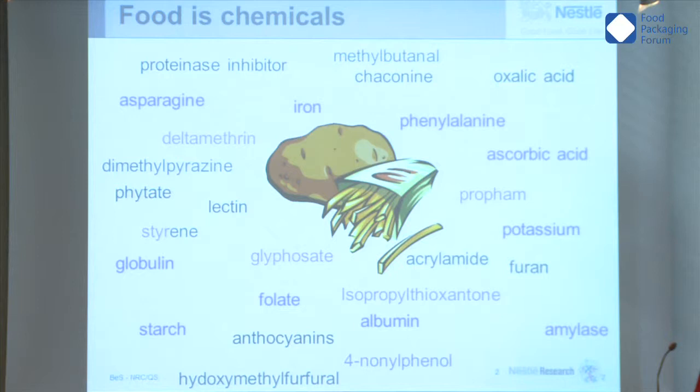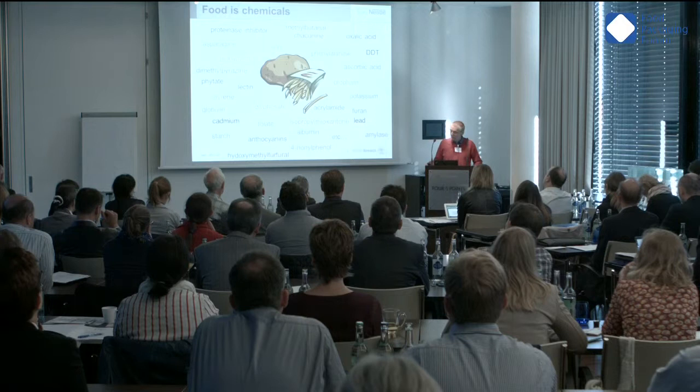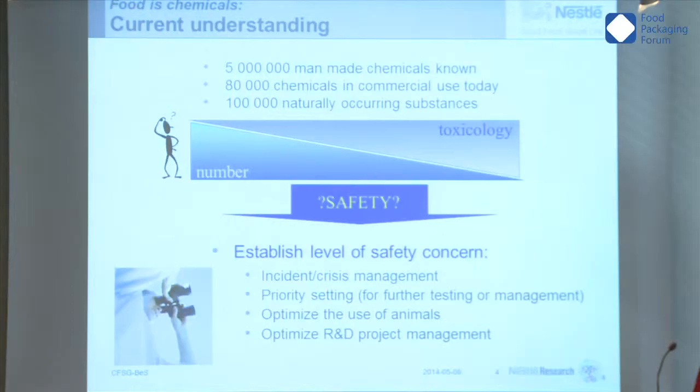Then you have many others which could be defined as indirect additives: residues from agricultural practices, chemicals migrating from the packaging, and all kinds of environmental contaminants — some naturally occurring, some pollutants. What I wanted to summarize with this potato story is simply the fact that you have a lot of chemicals in food. Food is a mixture of chemicals, and we need to keep that in mind.